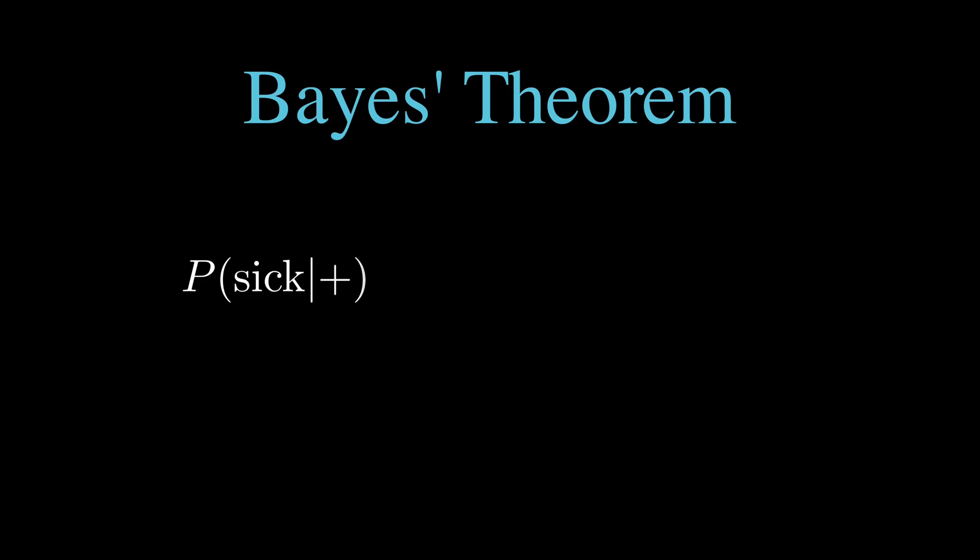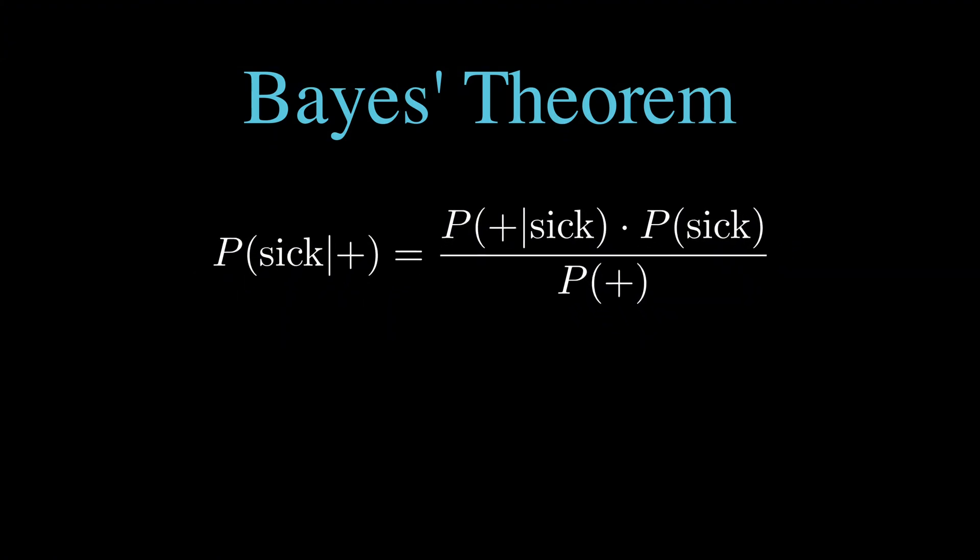The probability of being sick given a positive test, which we write as P(sick|+), equals P(+|sick) times P(sick), all divided by P(+). Let me break this down so it becomes crystal clear what each piece means and why we need it.